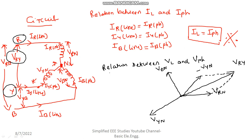What is the angle between minus Vyn and Vrn? You know the angle between Vyn and Vrn is 120 degrees — obviously 120 degrees, because the angle between two phase voltages is 120 degrees. But my requirement is the angle between minus Vyn and Vrn, which will be 60 degrees.